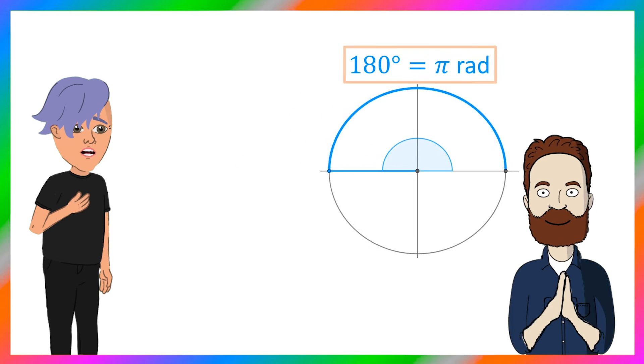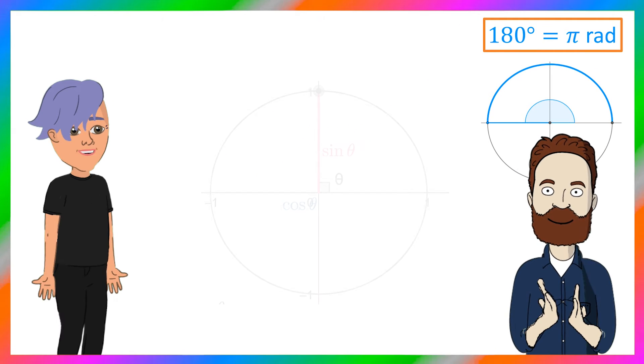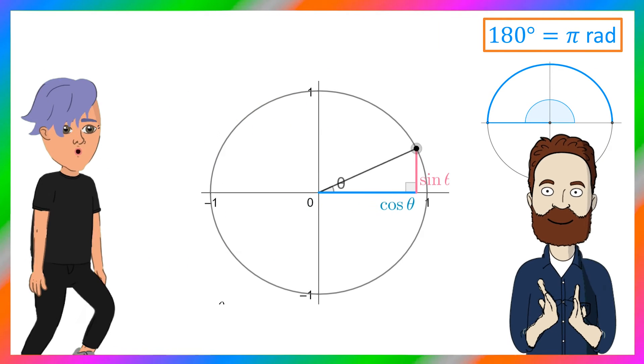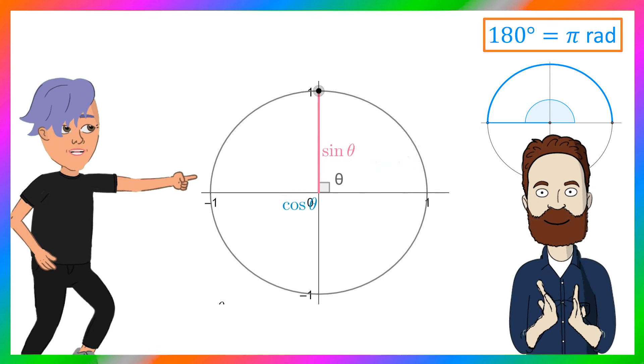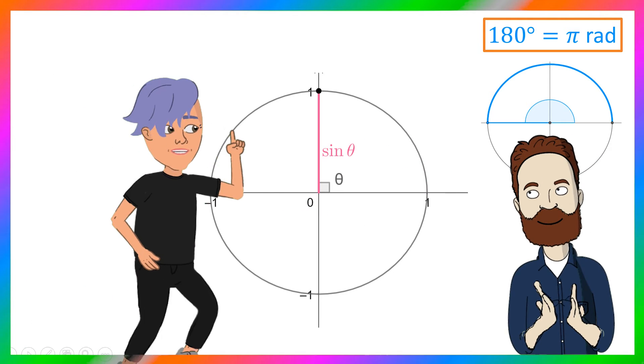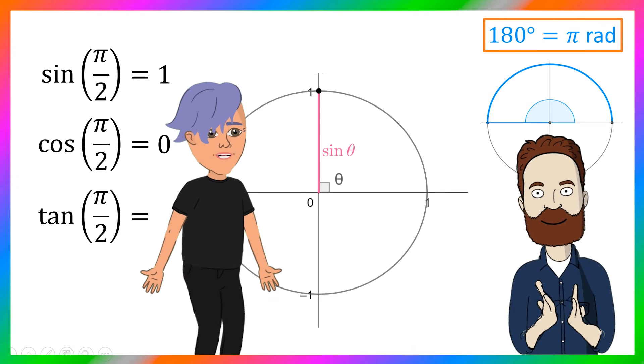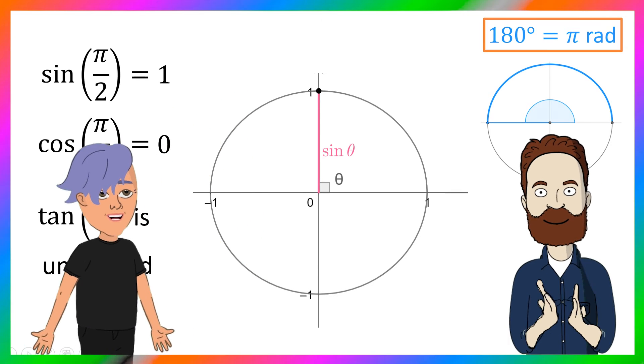And this wakes me up to more exact values, like the sine, cos, and tan of pi over 2. I can see the sine is 1 and the cosine is 0. That's why the tan is undefined.